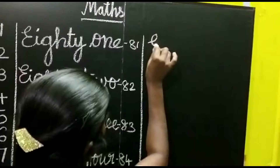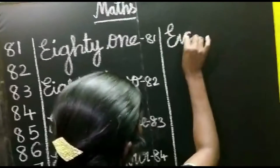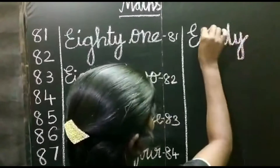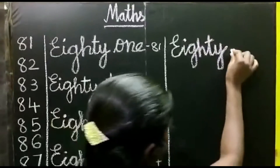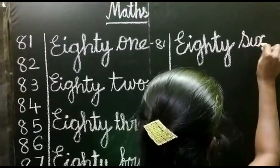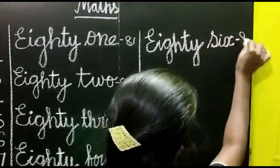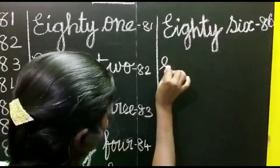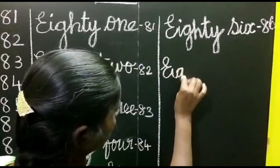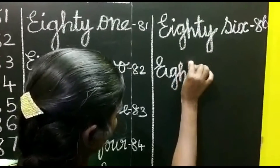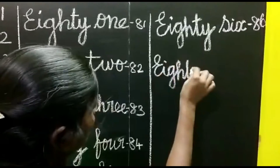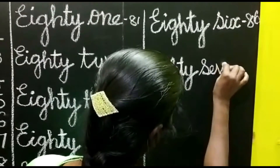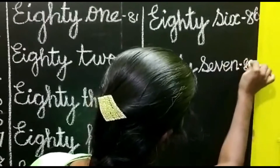86. E-I-G-H-T-Y. 86. S-I-X. 86 is EIGHTY SIX. 87. E-I-G-H-T-Y. 87. S-E-V-E-N. 87 is EIGHTY SEVEN.